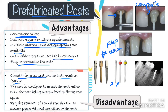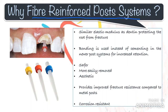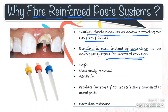Coming to the disadvantages: since prefabricated posts are circular in cross-section, they do not provide any anti-rotation feature. The root is modified to accept the post rather than the post being customized to fit the root space, and they often require removal of sound root dentine to ensure proper fit and retention. Metal prefabricated post systems, which were very commonly used earlier, are now gradually being replaced by fiber reinforced composite resin post systems. The fiber post system preserves tooth structure, is non-corroding, has a similar modulus of elasticity as dentine — decreasing chances of root fracture — and can be bonded instead of regular cementation, increasing retention. They are also safer, more easily removed, and aesthetic.